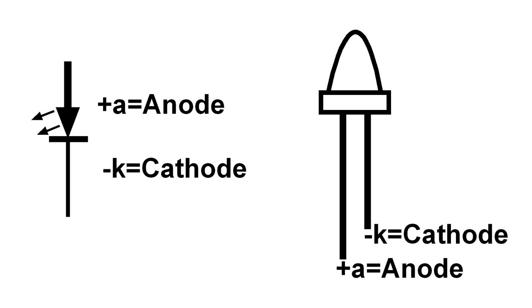Here's a symbol for an LED. And it has an anode, which is positive, and a cathode that is negative in the circuit.